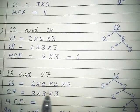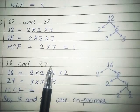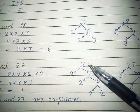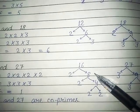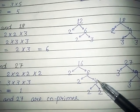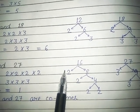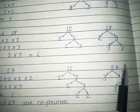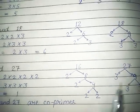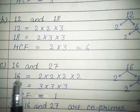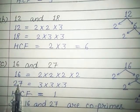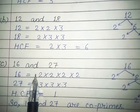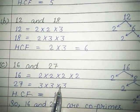We will take one more example: 16 and 27. You will also make prime factors. For 16: 2 into 8, then 2 into 4, then 2 into 2, giving 2 into 2 into 2 into 2. This way you will make the factors of 27. Now you will see that the factors of 16 and 27 are not common — 16 has only 2s and 27 has only 3s.